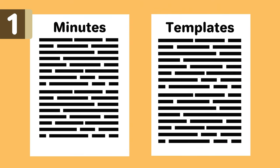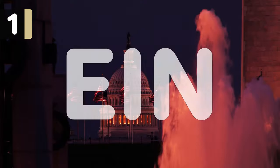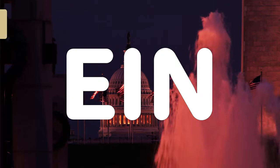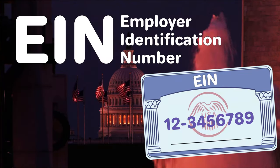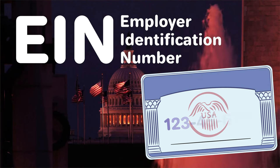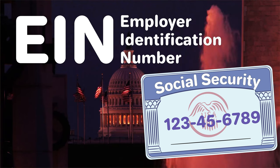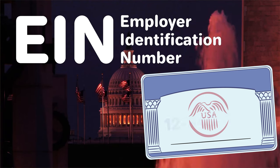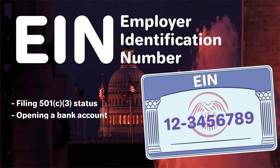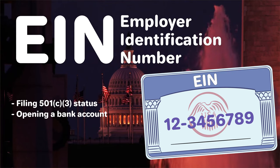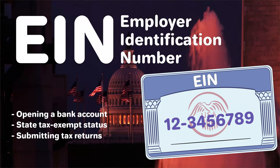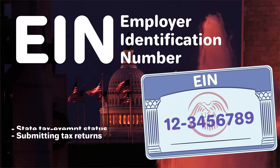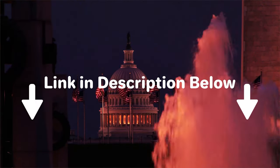We have some corporate minutes templates linked below to help you get the ball rolling. After your nonprofit has been formed, you'll need to apply for an EIN, or Employer Identification Number. An EIN is like a social security number for your nonprofit and is used for things like filing for 501c3 status, opening a bank account, applying for tax-exempt status, and submitting tax returns. For more information on EINs, check out our other video linked below.